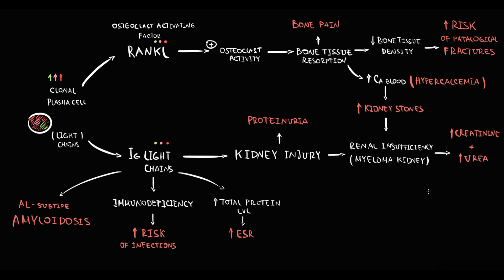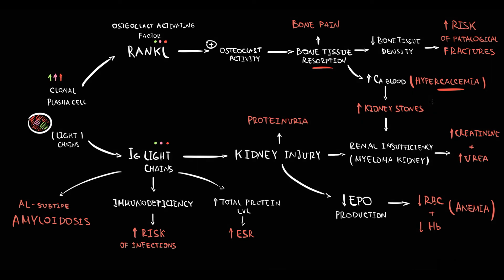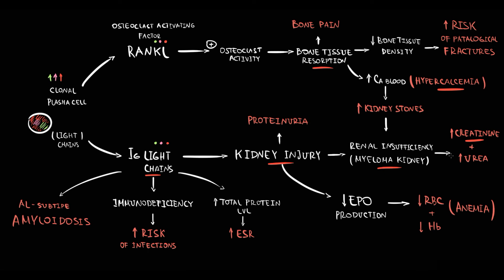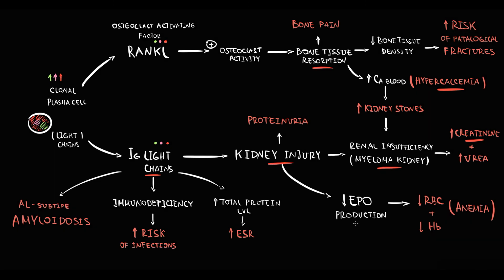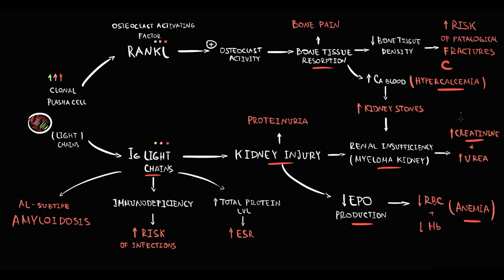With severe damage to the kidney, the production of erythropoietin by the kidneys decreases, thereby the level of red blood cells and hemoglobin will decrease. The condition characterized by a low level of hemoglobin is called anemia. So multiple myeloma leads to severe damage to bone tissue, causing hypercalcemia. Hypercalcemia together with extremely high production of monoclonal pathological immunoglobulin leads to renal insufficiency, characterized by high creatinine level. Renal damage causes decreasing erythropoietin production, leading to anemia. Together, these manifestations are known as CRAB criteria.